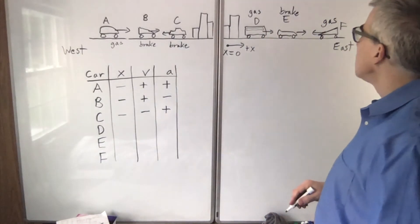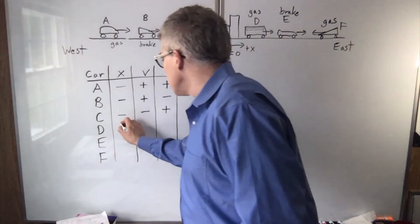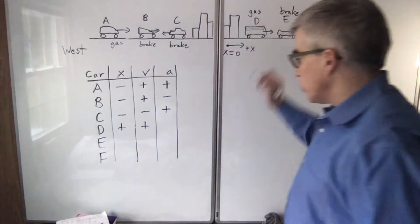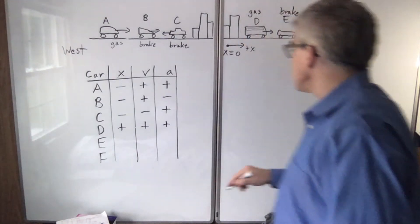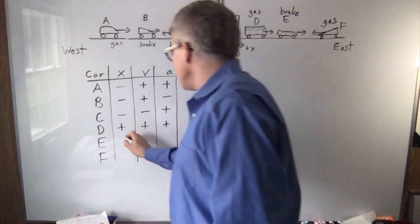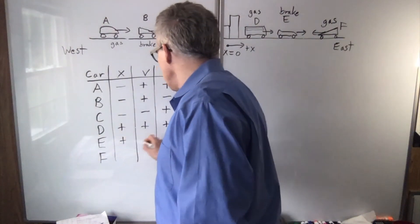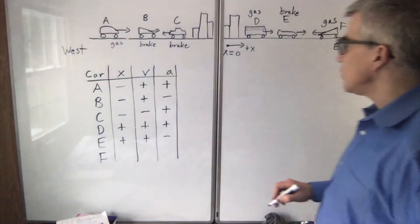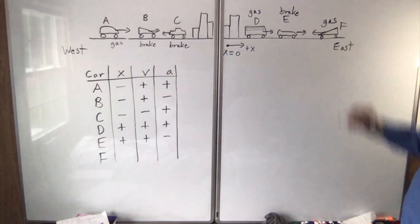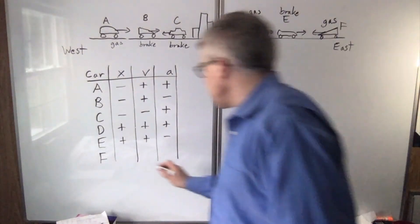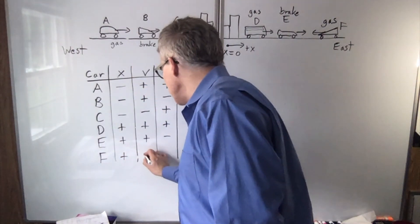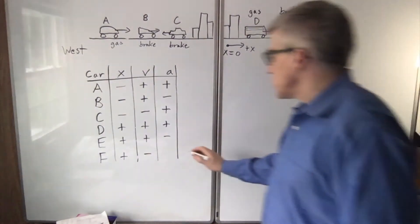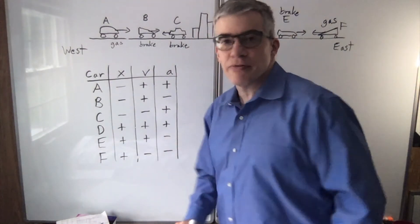Car d — we are east of town, moving in the positive direction, and hitting the gas, so v and a match. Car e — we're east of town, driving in the positive direction, but hitting the brake, so the velocity is becoming less. Car f — we are east of town, driving west, and hitting the gas, so the acceleration is negative as well.